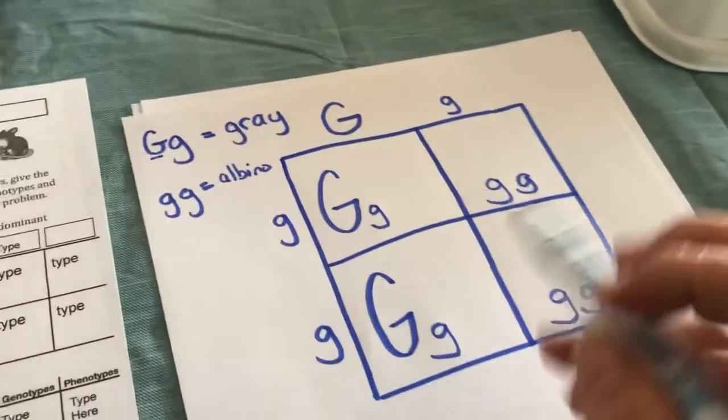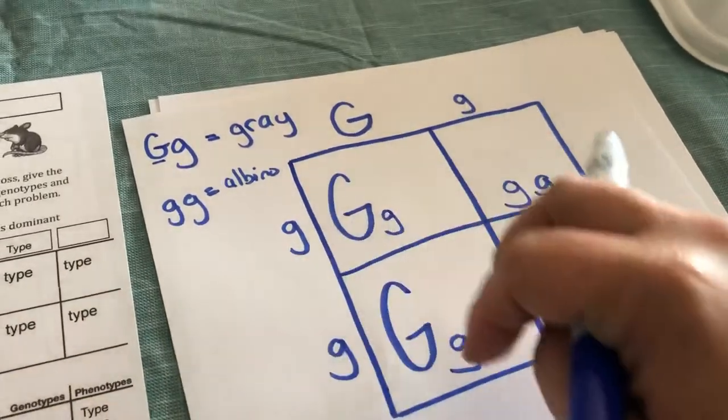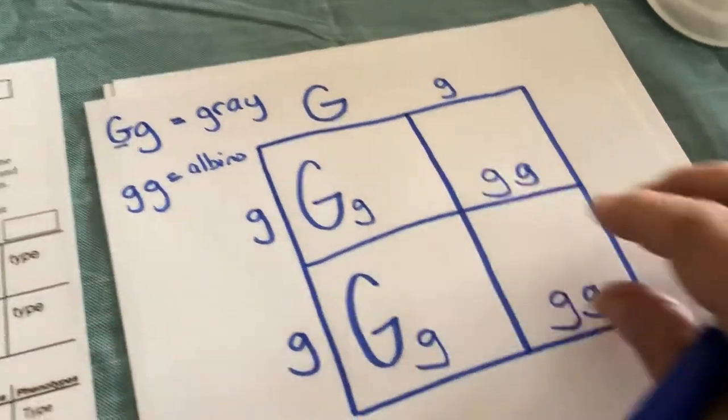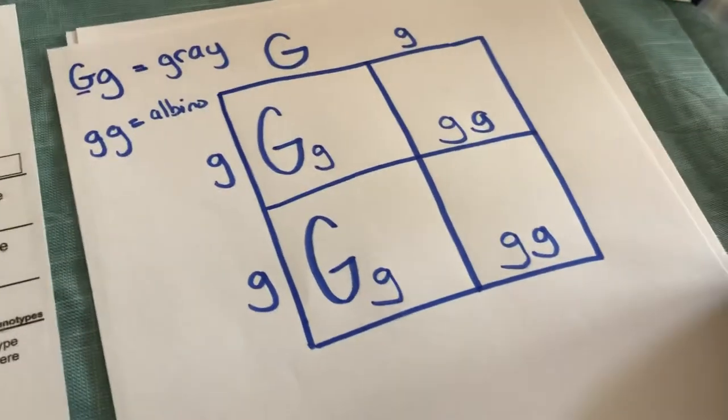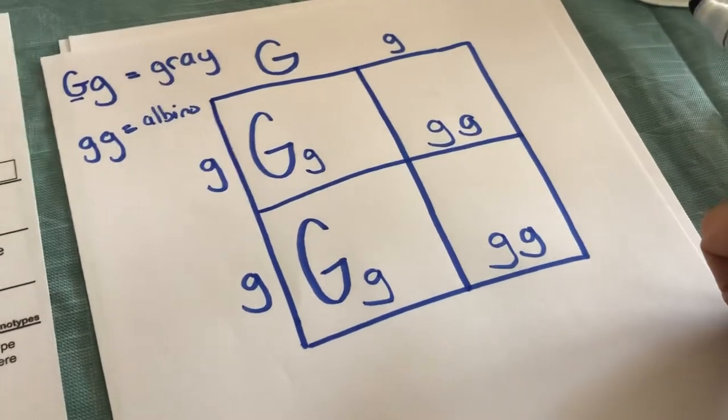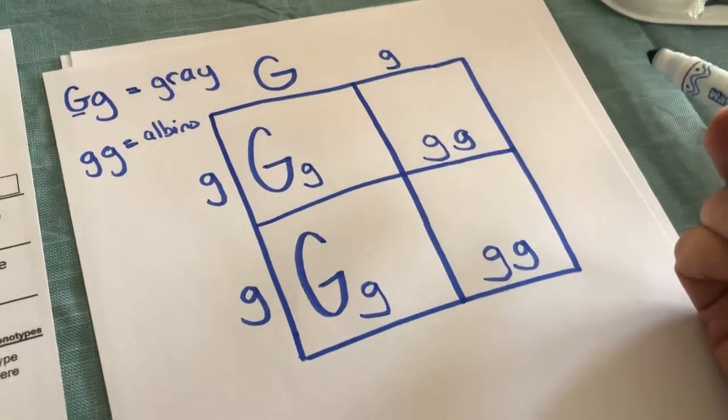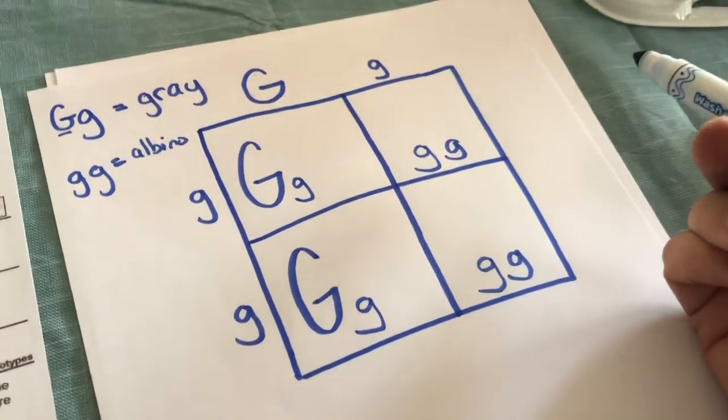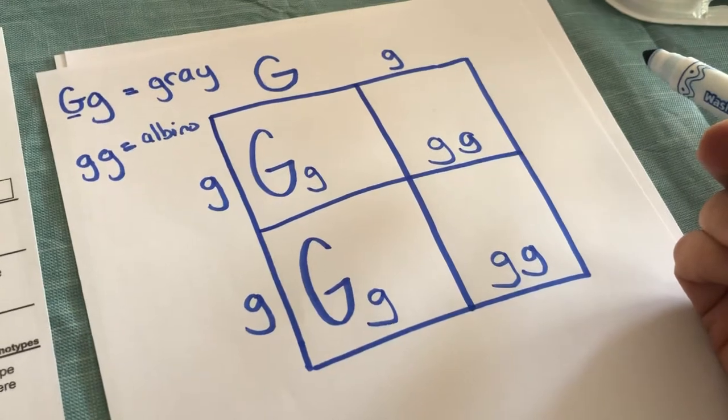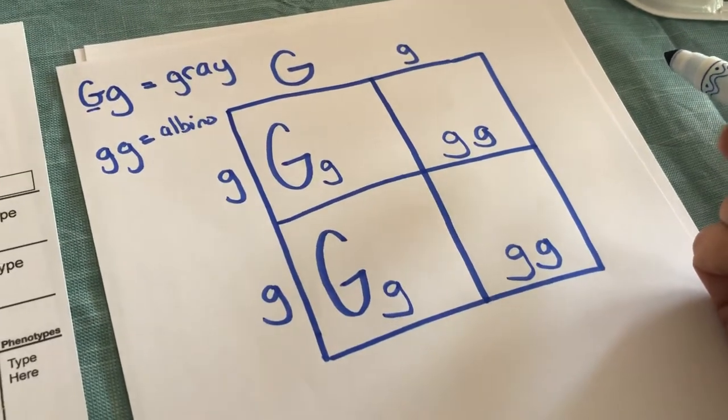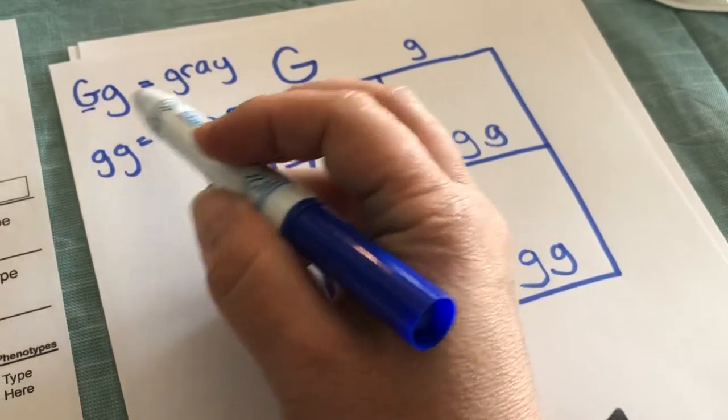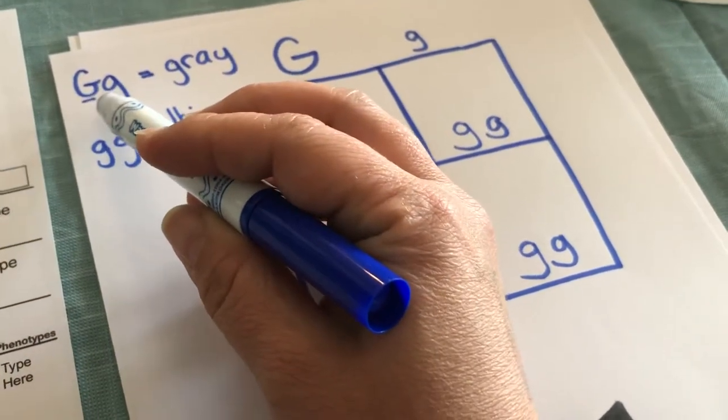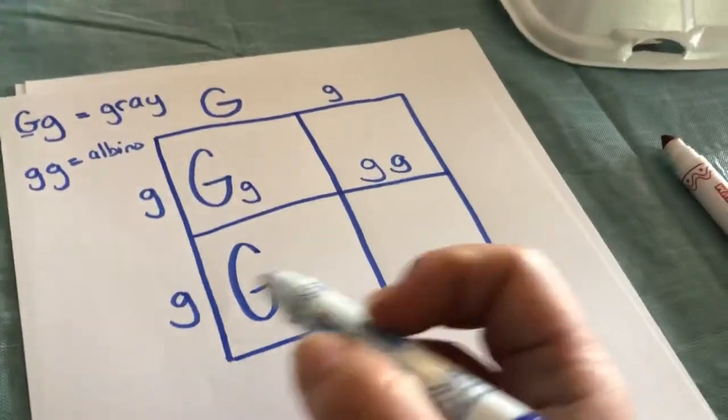Once you make this cross or once you have the mom's genes, the dad's genes, and then you show here in a Punnett square the alleles that are going to be passed along, now you've got questions to answer that are listed below problem one. Number one says, what is the probability of getting gray offspring? Let's see here. What are the genotypes?